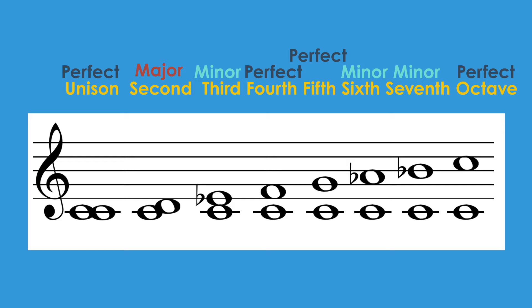So we have a perfect unison, a major second, a minor third, a perfect fourth, a perfect fifth, a minor sixth, a minor seventh, and a perfect octave. These intervals will be the same in any natural minor scale.